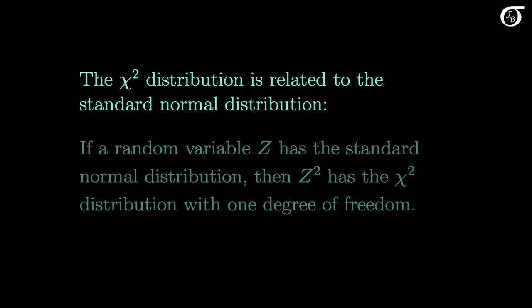Like some other continuous probability distributions, the chi-square distribution is related to the standard normal distribution. If a random variable z has the standard normal distribution, then z-squared is a random variable that has the chi-square distribution with 1 degree of freedom.